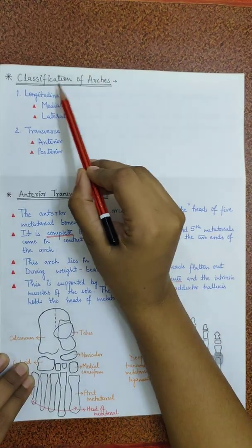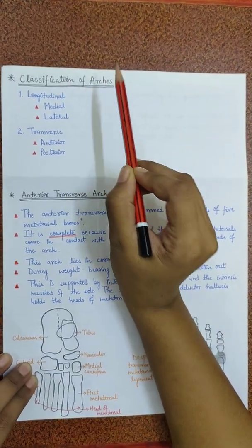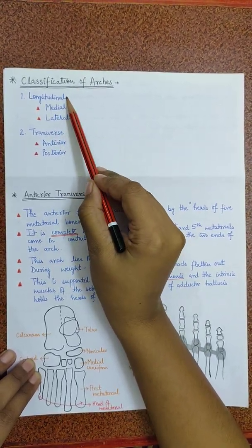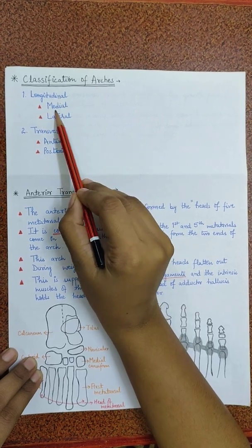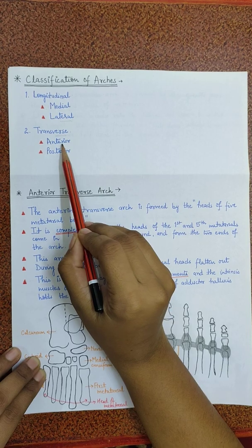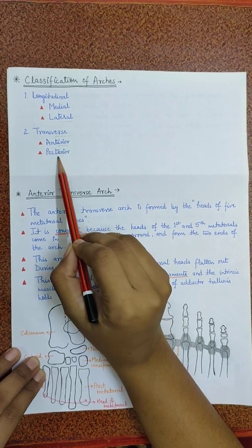Now we will see the classification of arches. There are two types of arches: Longitudinal and transverse. Longitudinal is of further two types medial and lateral. Then there are transverse arches which are of two types anterior and posterior.